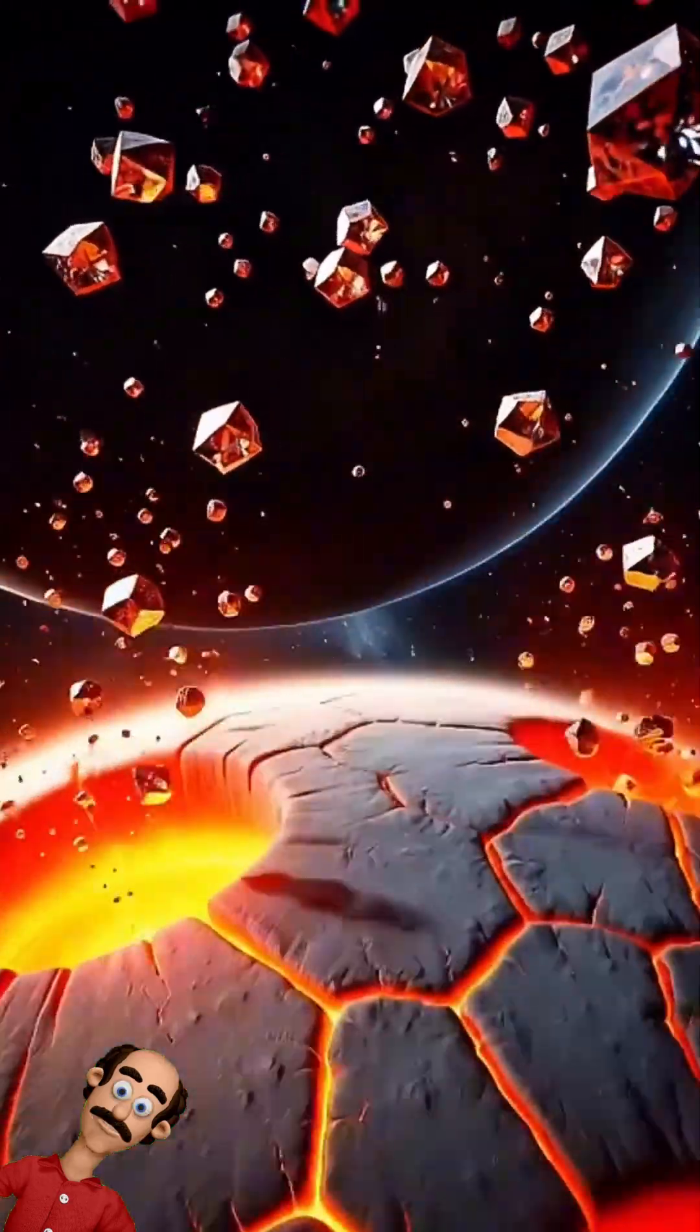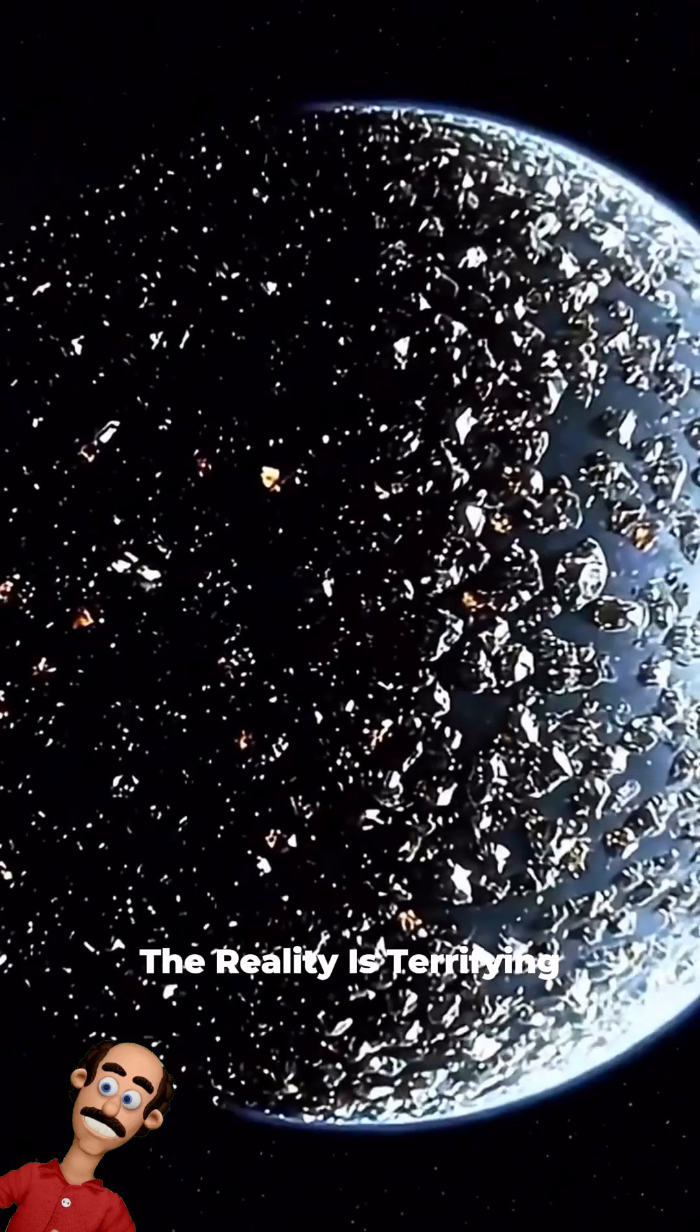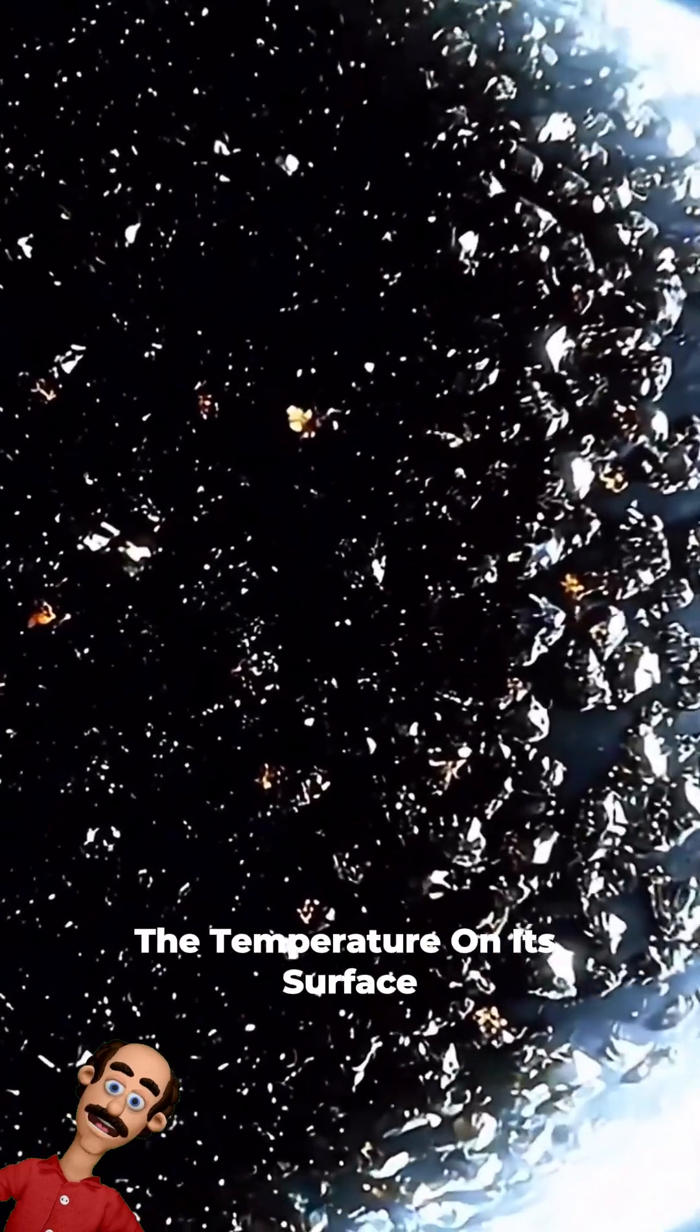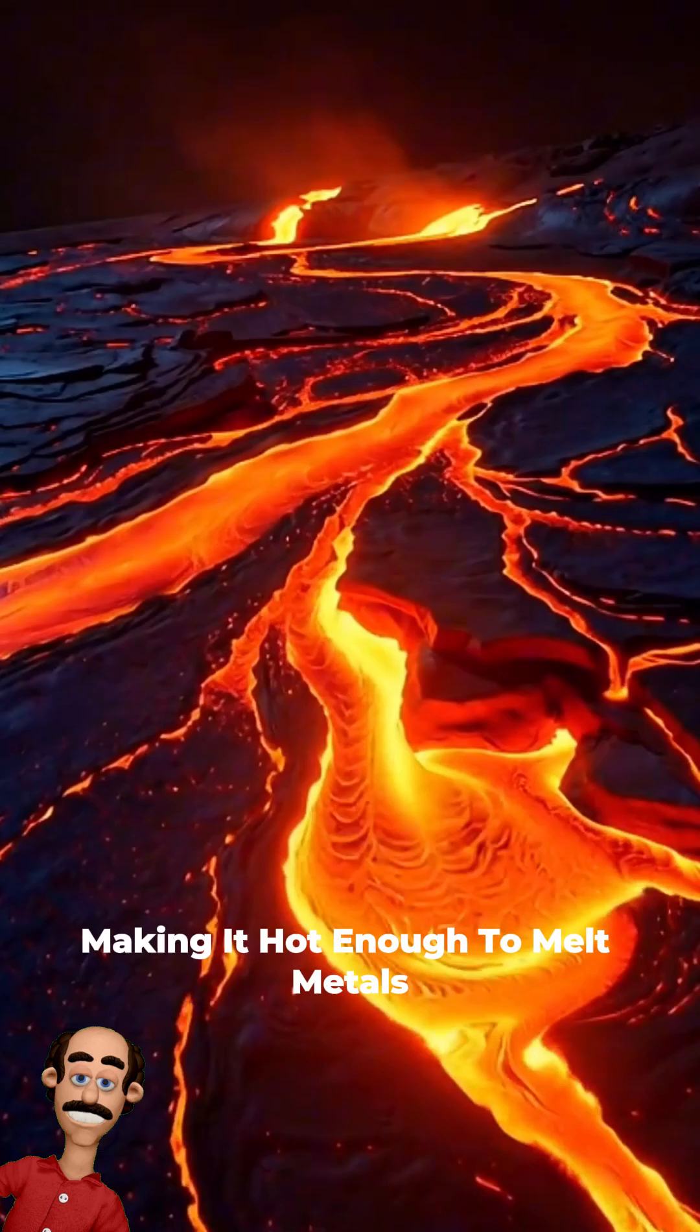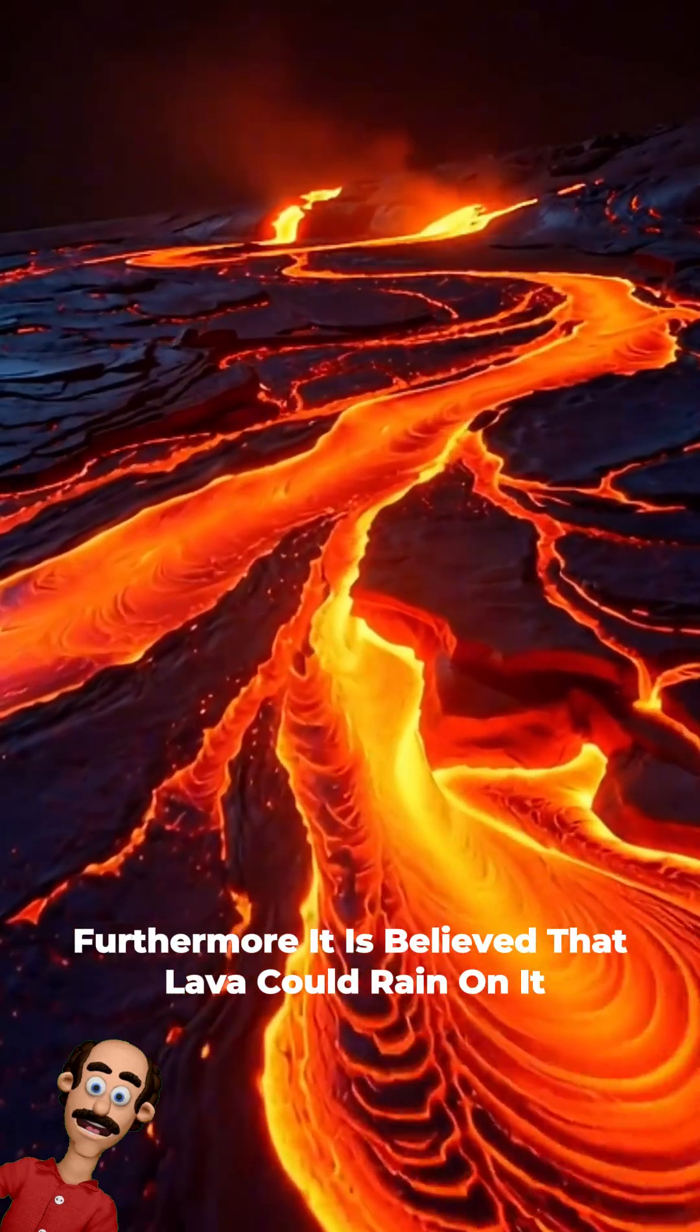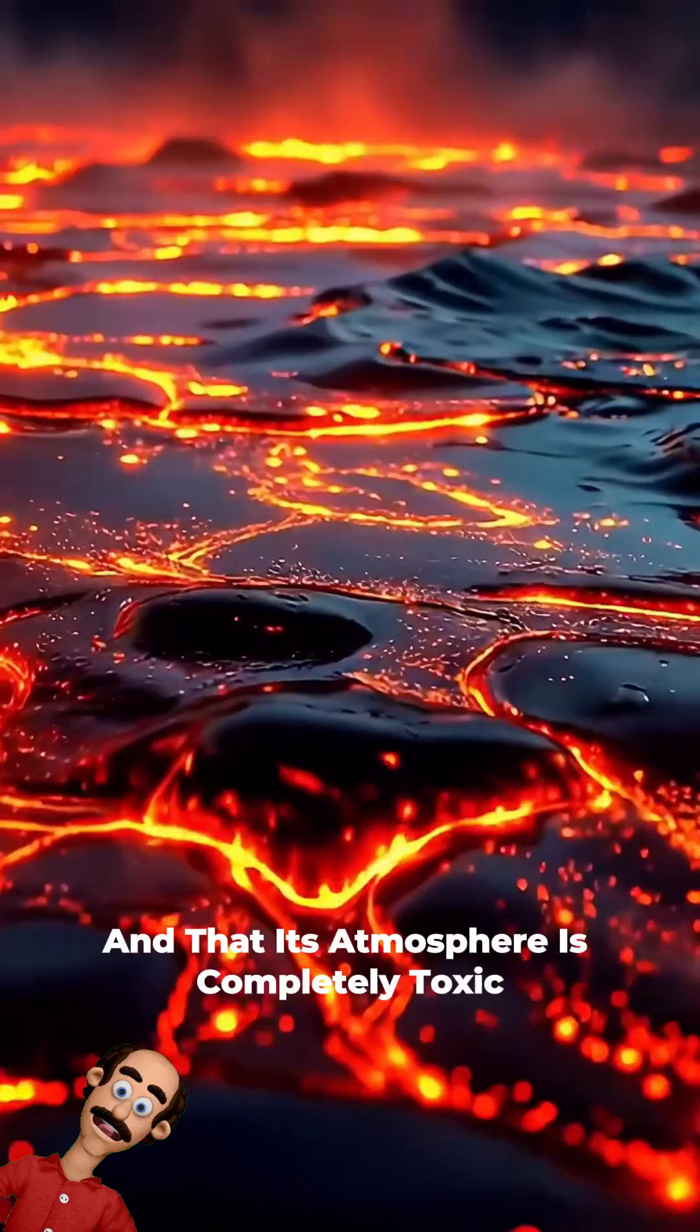But don't be fooled. Despite seeming like an enchanting place, the reality is terrifying. The temperature on its surface exceeds 2,000 degrees Celsius, making it hot enough to melt metals. Furthermore, it is believed that lava could rain on it and that its atmosphere is completely toxic.